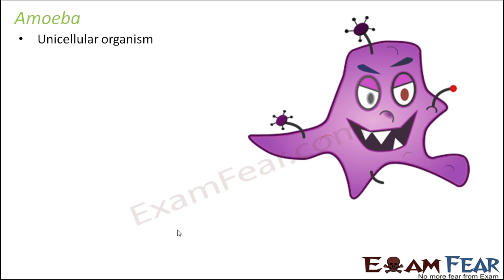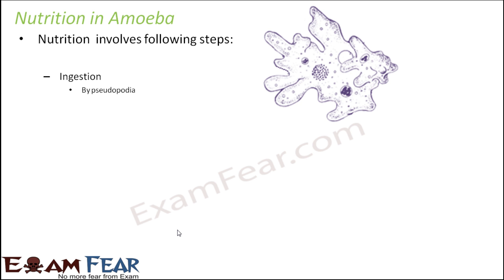Amoeba is a unicellular organism and it also has holozoic nutrition — it also takes in complex food. The way amoeba takes food inside its body with the help of just one cell is very interesting. In the case of amoeba, nutrition is not one step; it also involves a lot of steps. The first step is ingestion, and ingestion — that is, intake of food — happens with the help of pseudopodia. What is pseudopodia?